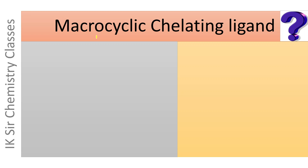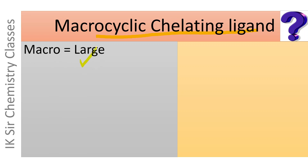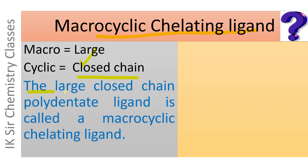And now, what is a macrocyclic chelating ligand? Macro means large and cyclic means closed chain. The large closed chain polydentate ligand, having more than one donor atom, is called a macrocyclic chelating ligand.